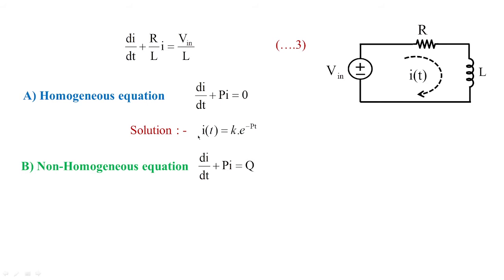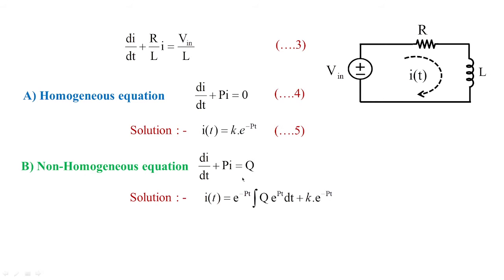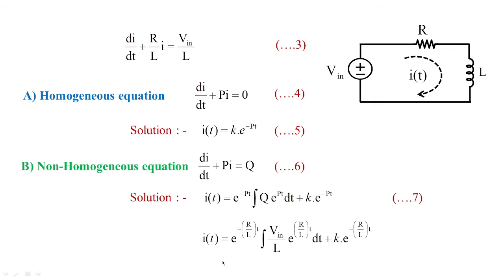Similarly, the general solution for the non-homogeneous equation is: i(t) = e^(−pt) · [integral of q·e^(pt) dt] + k·e^(−pt). With these two mathematical results — equations 4, 5, 6, and 7 — we apply them to equation 3 to obtain the general solution of i(t), since we treat it as a non-homogeneous equation.